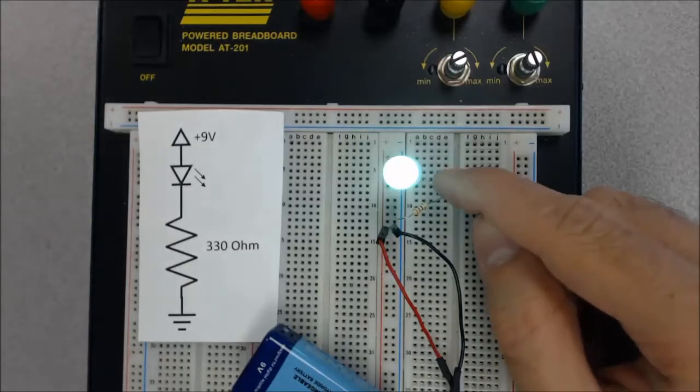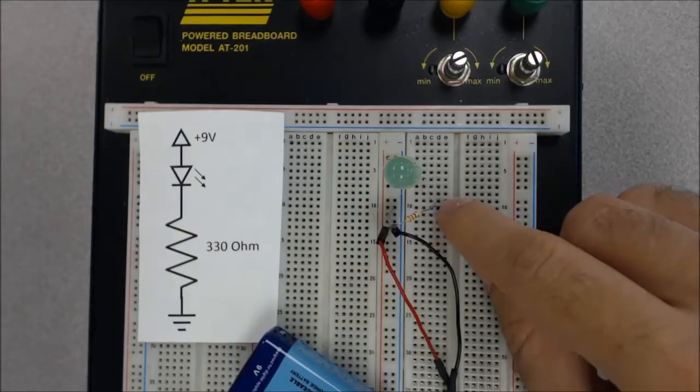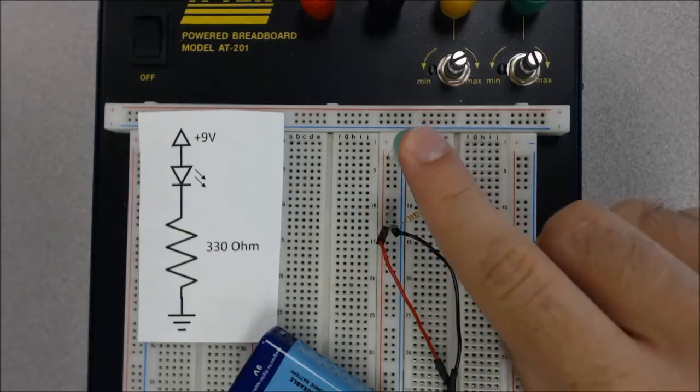So remember, the important thing was that these two went in the same row. If I had put them in the same column over here in the midsection, then that LED wouldn't have lit up.